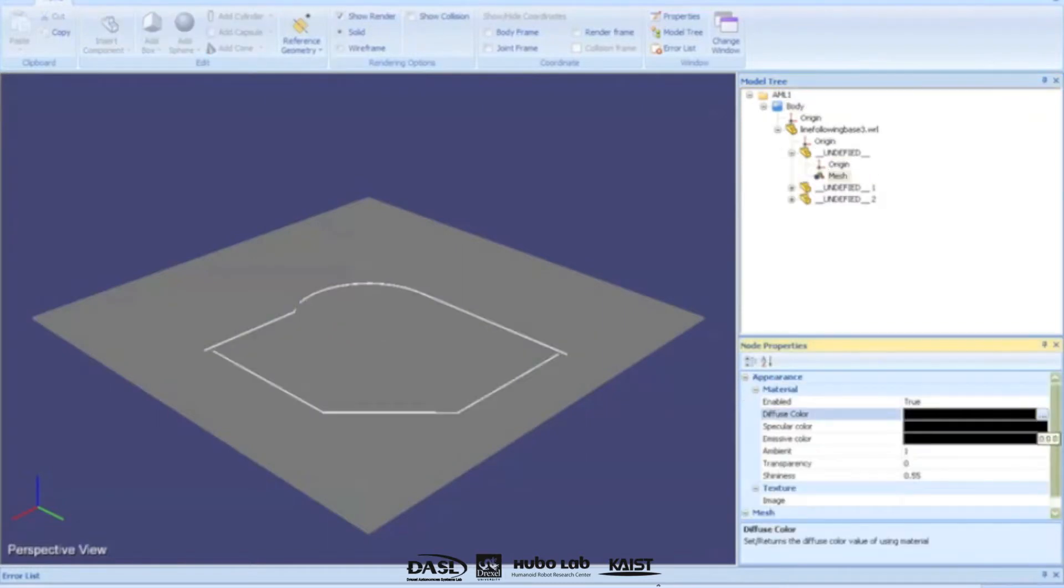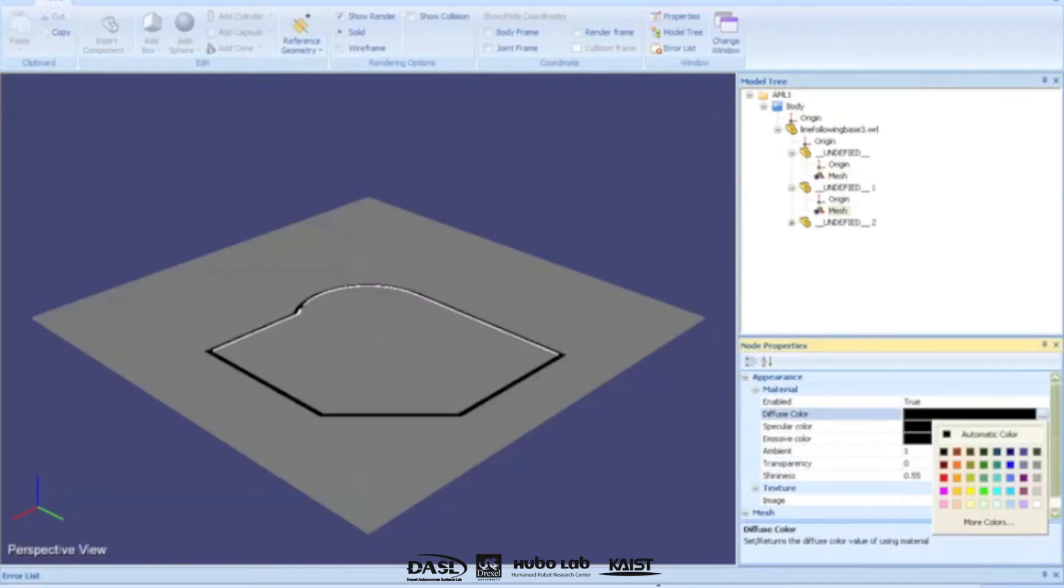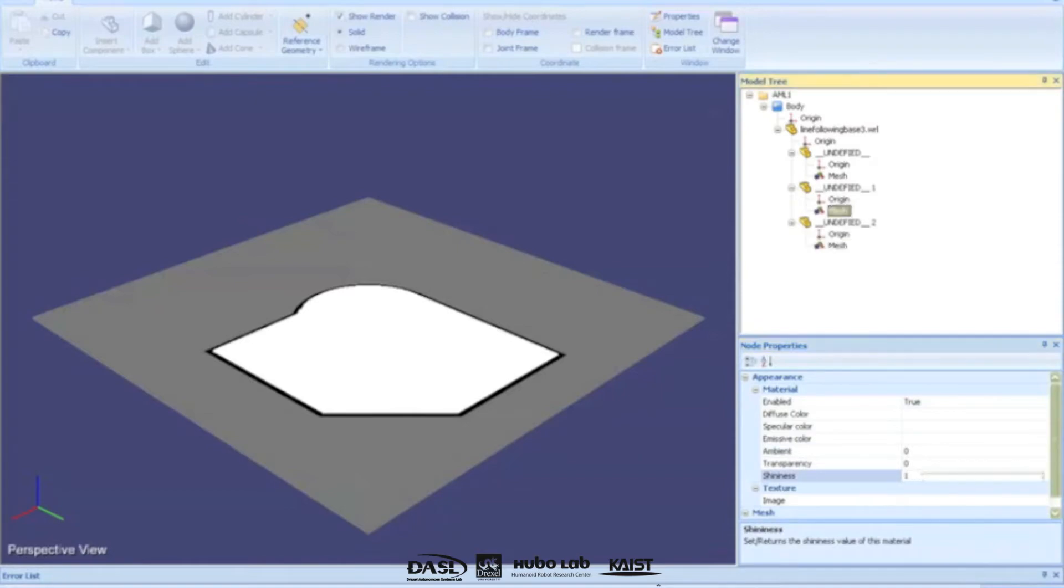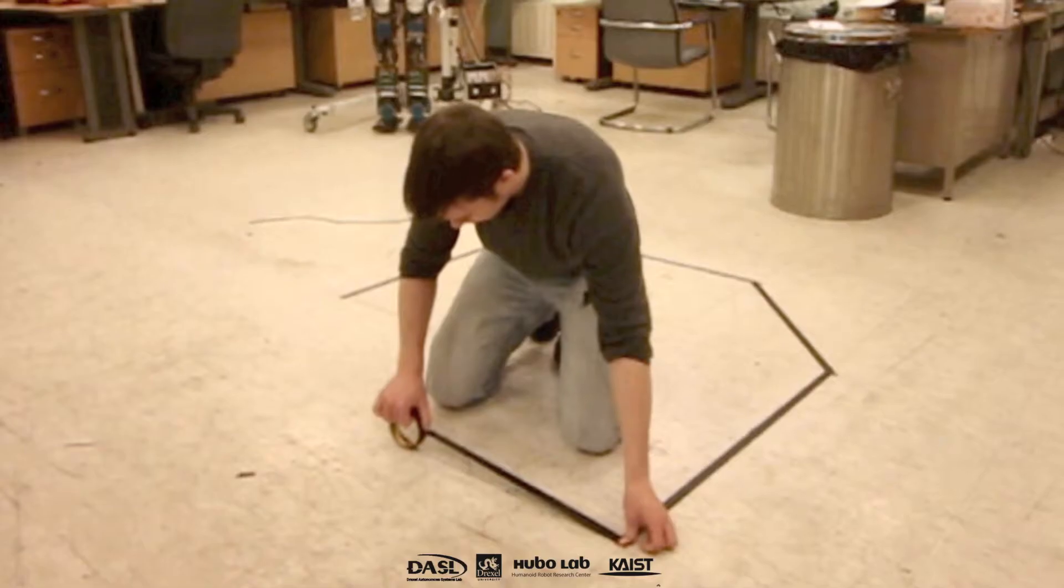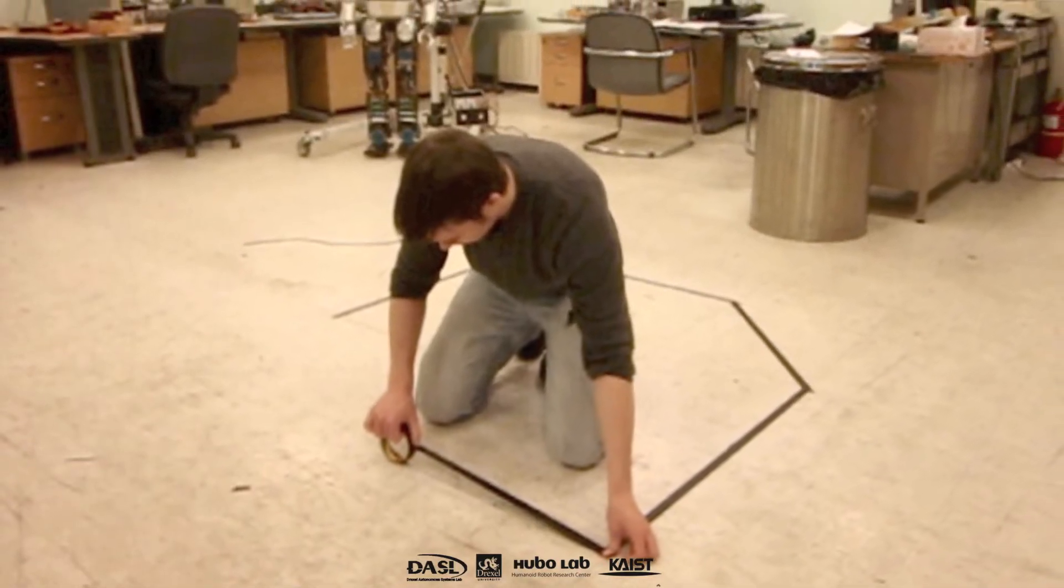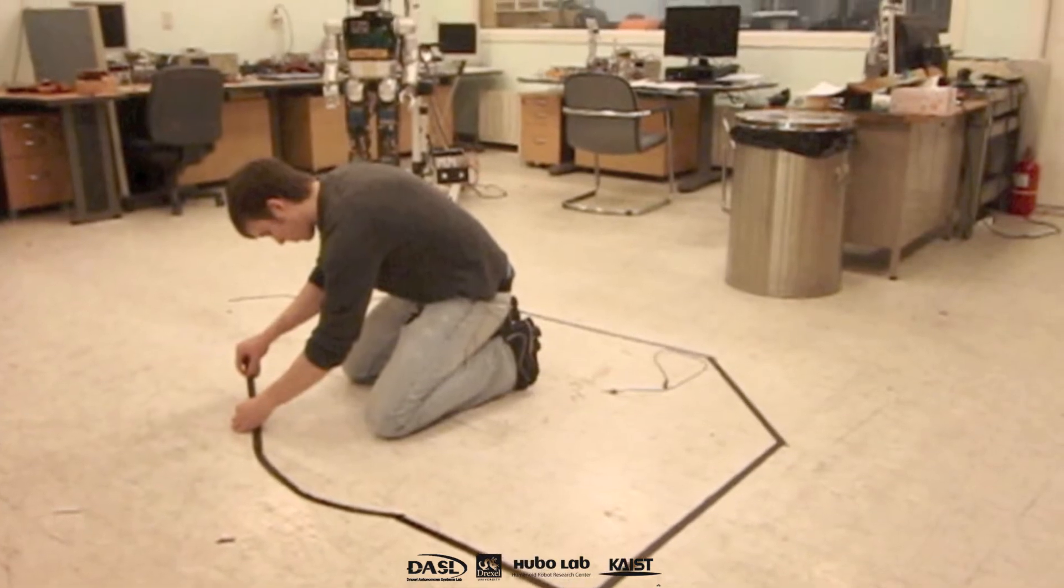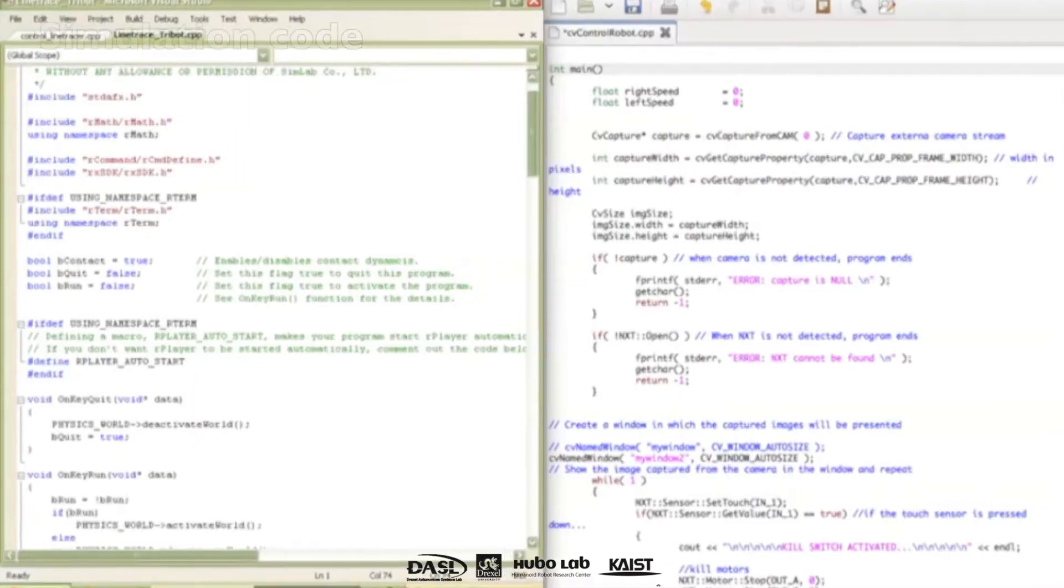For the simulation, the course was created using a SolidWorks VRML file, imported into and colorized in Simlabs R Builder. The real world course was created on a lightly colored tile floor using medium width black painter's tape.